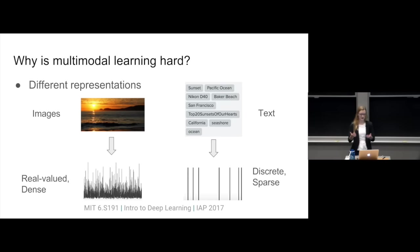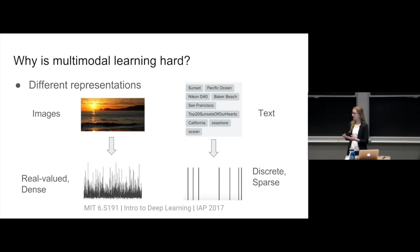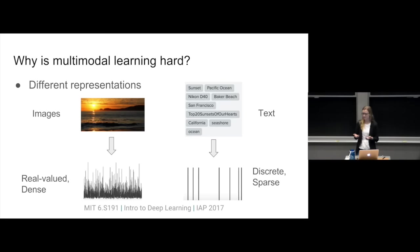So why haven't we done a whole lot of multimodal learning? These different modalities have very different representations. If you think about images, these are real-valued and really dense in the form of pixels, compared to something like text, which is very sparse and discrete. So it's really hard to combine these two different representations into one model.